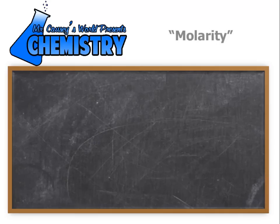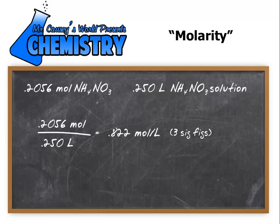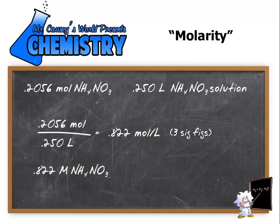Now it's time to calculate molarity. We have our two quantities: 0.2056 moles per 0.250 liters. Plug and chug, and we get 0.822 moles per liter, which is the same as 0.822 molar ammonium nitrate.